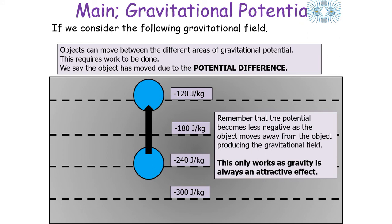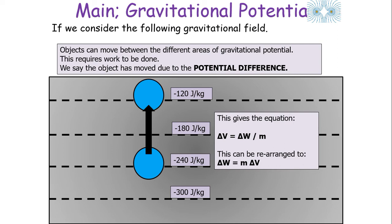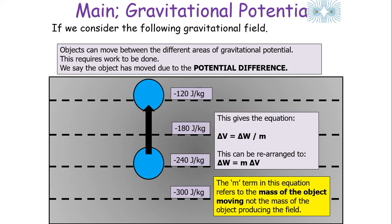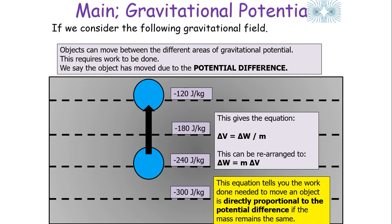This gives us the equation ΔV = W/m, rearranged to W = mΔV, where work done equals mass times change in potential. This tells you the work done needed to move an object between two points of different potential in a gravitational field. Note that m here refers to the mass of the object moving, not the mass of the object producing the field. The work done needed to move any object is directly proportional to the potential difference, provided the mass remains the same throughout the move.